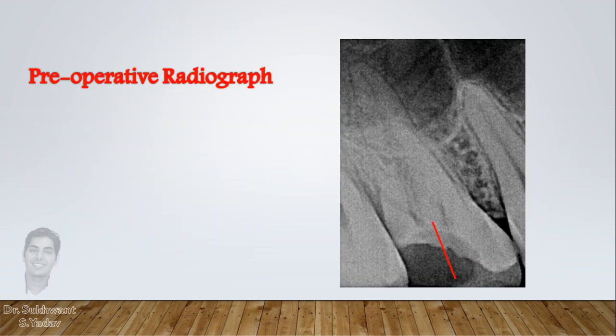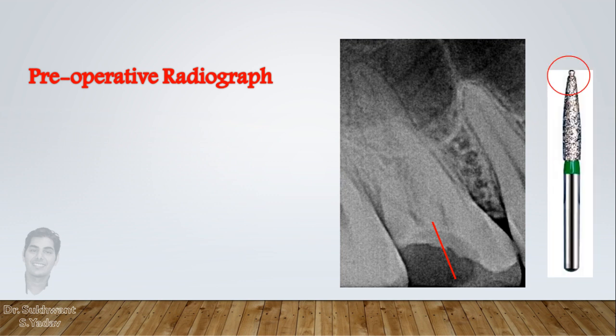Last but not least, it is always better to assess the preoperative radiograph before access opening. You can measure the depth of the pulp chamber and mark the same on the bur to avoid perforation. Once you enter the pulp chamber, always use safe-end burs to enlarge the access cavity to avoid furcal perforations.